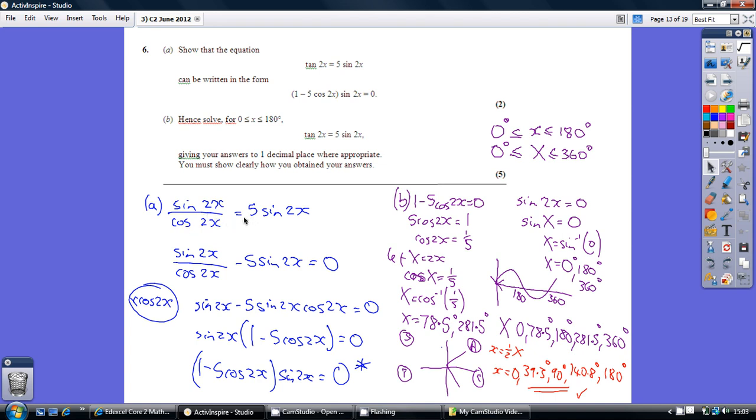Then go and bring the right hand side over to the left hand side. Multiply through by cos 2x gives us this. Factorize gives us this. And then really just writing it the other way around gives us what we had to show.